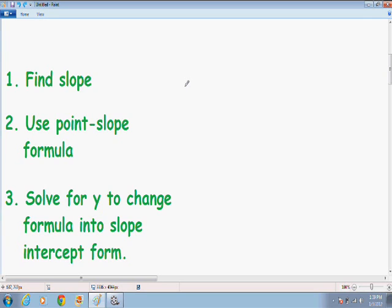And the first step, number one, is to find the slope. And when you're given two points, like in this problem, you need to use the slope equation in order to find the slope of this particular line.